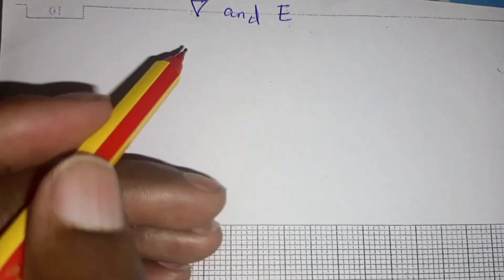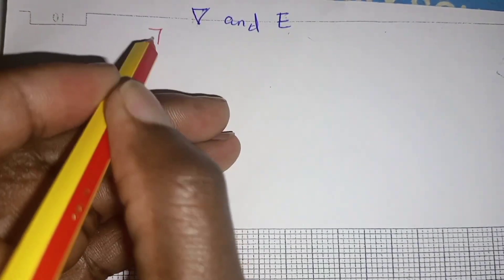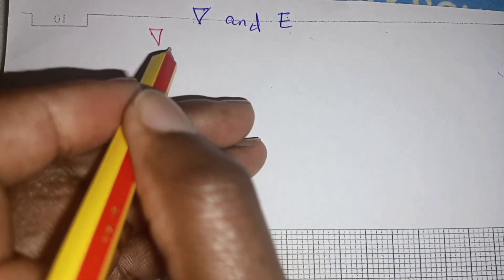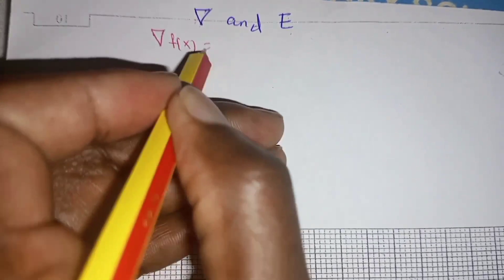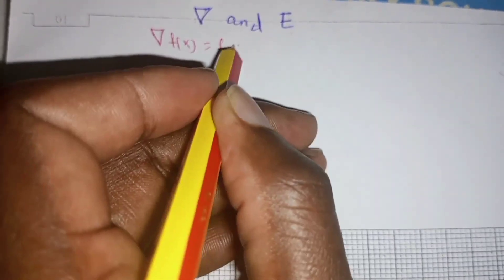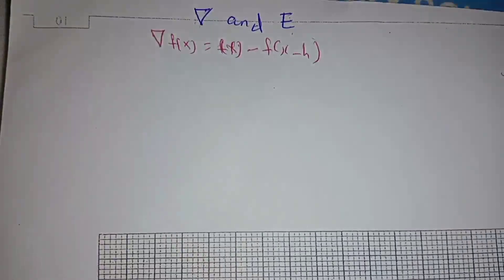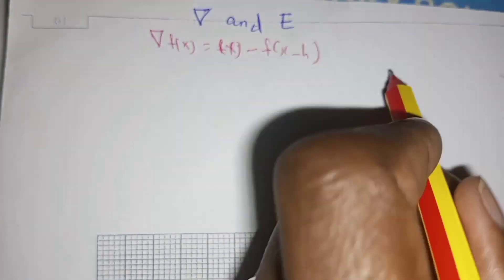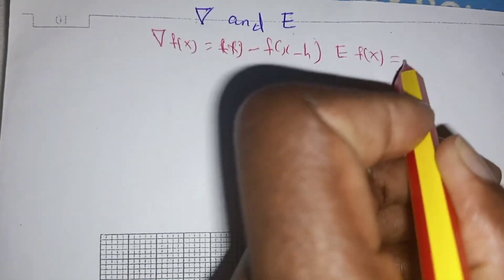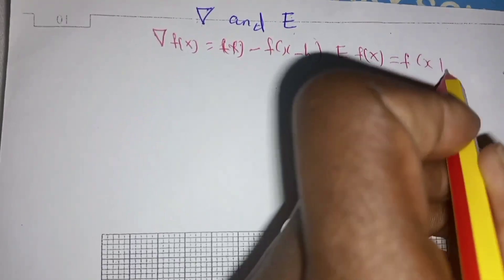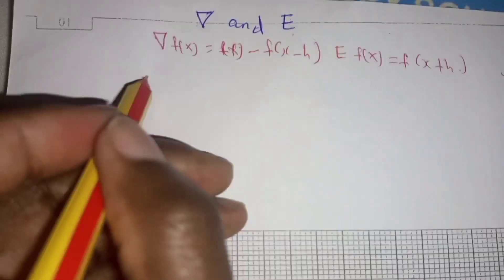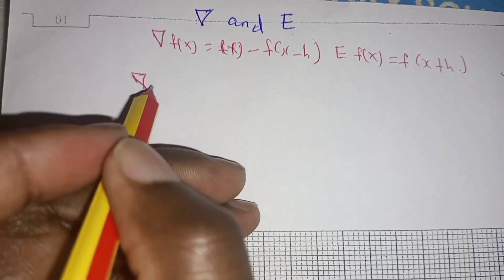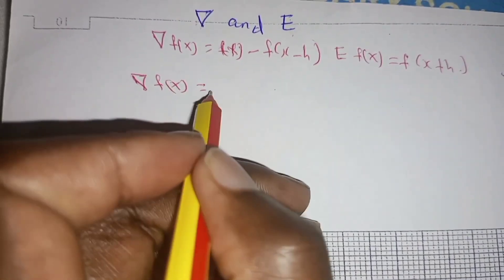To begin with, we are going to define the backward difference operator of f(x), which is defined as f(x) minus f(x minus h). That is the definition of the backward difference operator. The definition of the shift operator of f(x) is defined as f(x plus h).